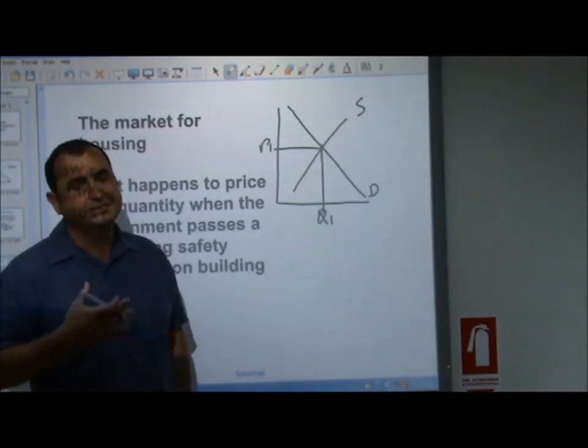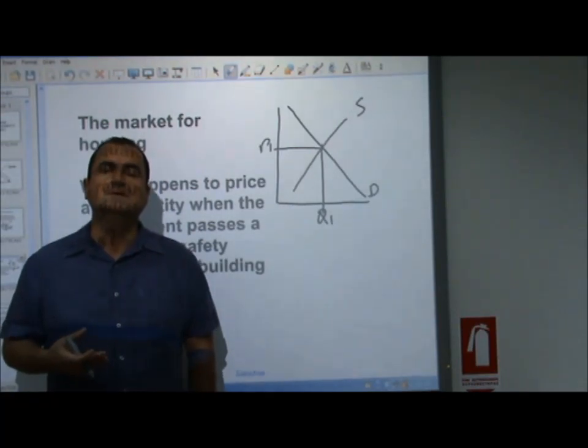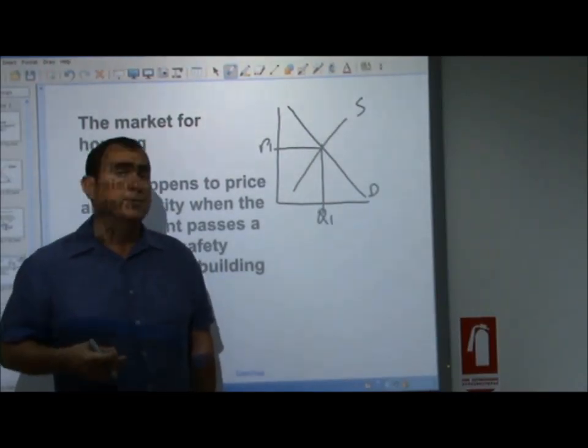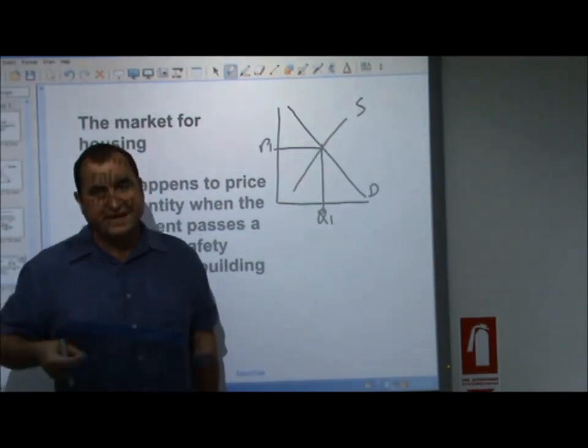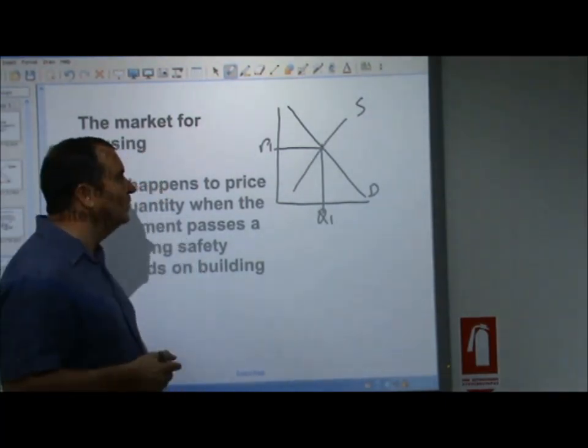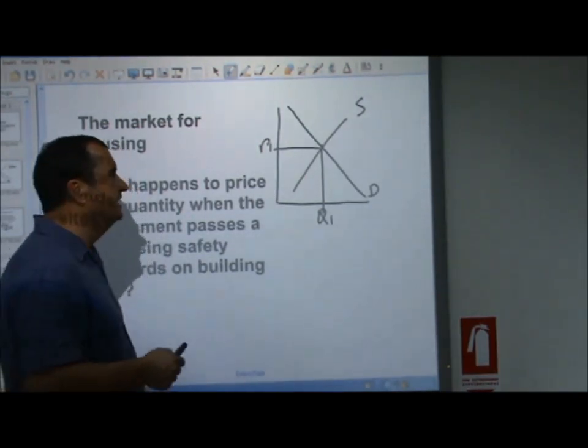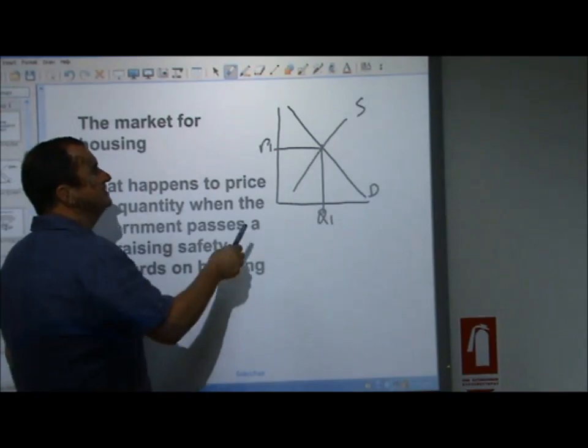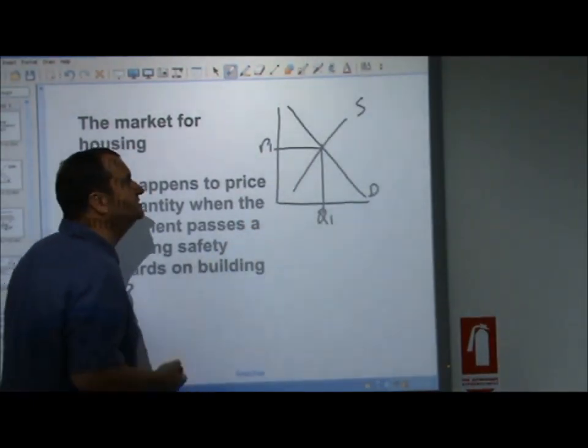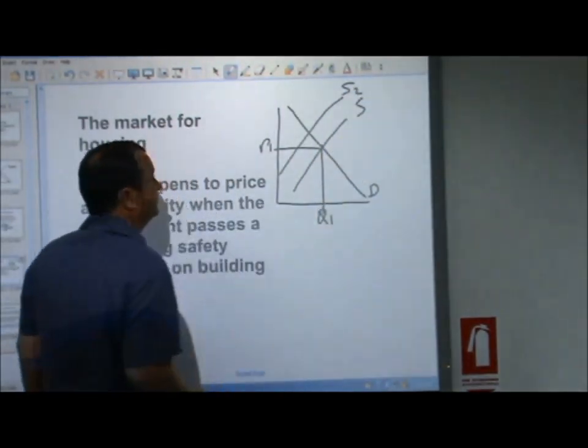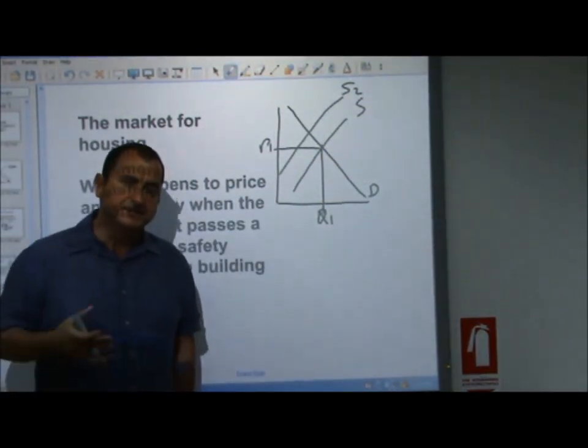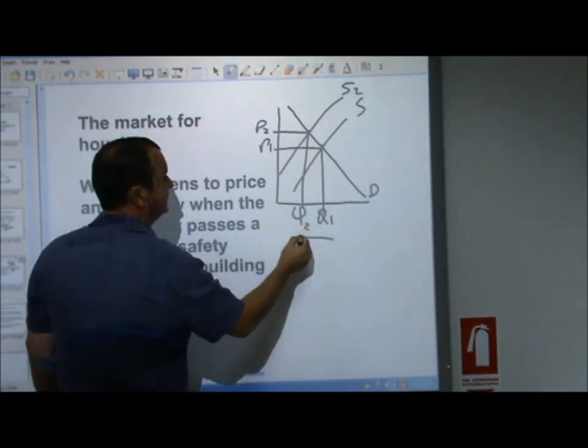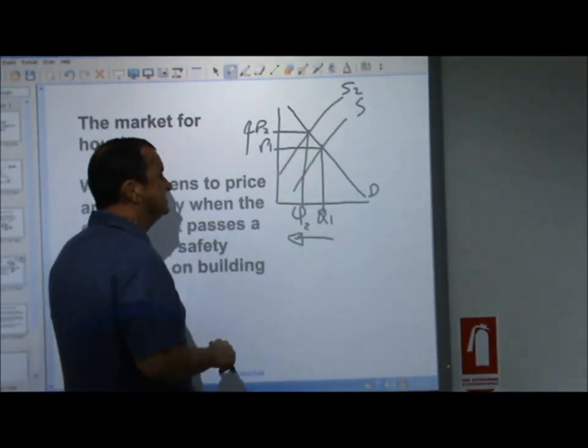It's certainly going to affect supply. It's going to raise costs of production for building firms. They're going to have to pay more costs as they make their building sites safer. Rising costs of production affect the willingness of suppliers to supply. It's going to reduce supply. Rising costs of production reduce supply. That's a fall in supply, a decrease in supply. The equilibrium point is here. Price P2, quantity Q2. Less houses are sold, and they're sold at higher prices.